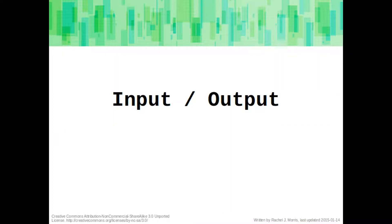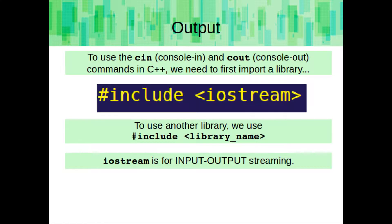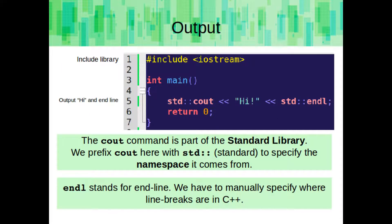Now let's talk about outputting information to the screen and getting information from the user via the keyboard. To use cin (console in) and cout (console out) commands in C++, we need to first import a library using pound include, then the library name. Iostream is for input-output streaming. The cout command is part of the standard library, prefixed with std and two colons to specify the namespace. endl stands for endline — we have to manually specify where line breaks are in C++.